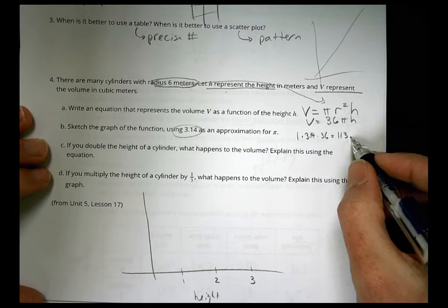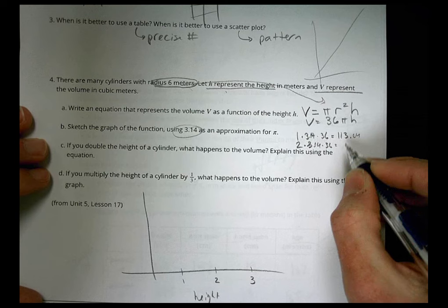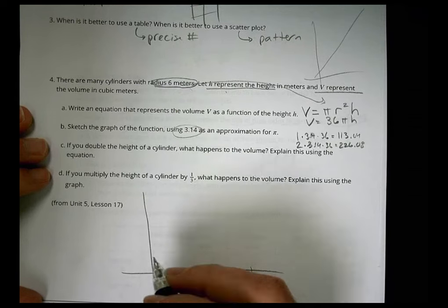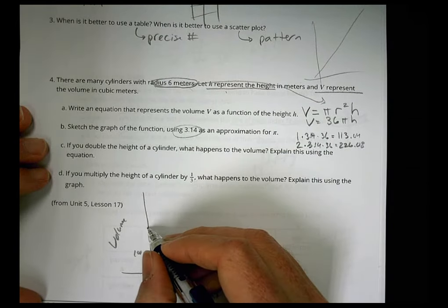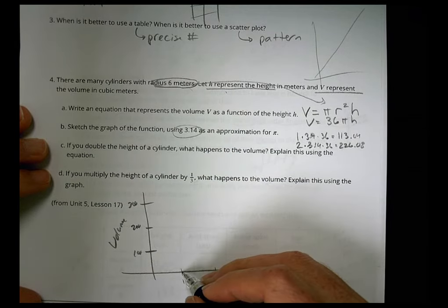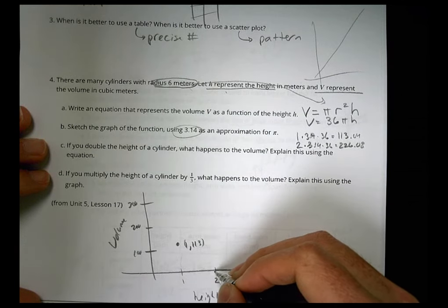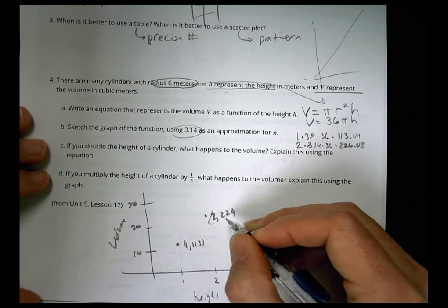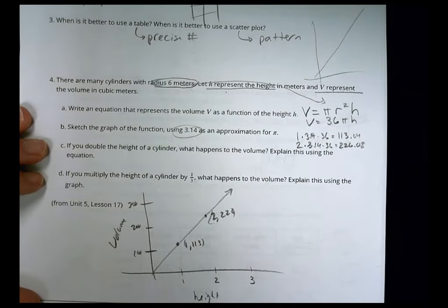Or 113.04. So you can do the math there if you like. If I did it by 2, 2 becomes equal to 2 times 3.14 times 36. You're going to double that and you get 226.08. So let's just graph this out here. This becomes my volume over here. So I got a volume of 100 and then 200 and 300. And at 1, with a height of 1, the volume is about 113. So 1, 113. With a height of 2, I'm at 226. So I have 2, 226. And this can continue there. So you can see that there is definitely a pattern for the way that's going there. It would be linear in that regard.